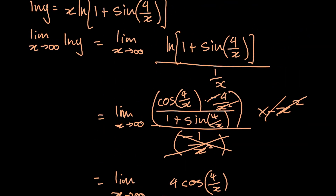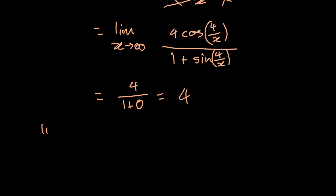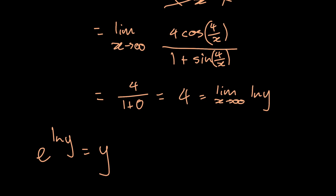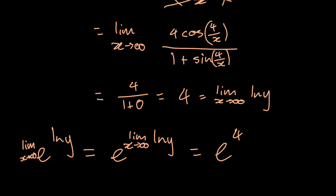But we're not done yet — that's the limit of the natural log of y. We need the limit of y itself, since we made the original function equal to y. We have the limit as x approaches infinity of the natural log of y equal to four. If we put the natural log of y in the exponent of e, that's just y. Taking the limit as x approaches infinity, we bring the limit up into the exponent since e is a constant. And since the limit of the natural log of y equals four, our final answer is e to the power of four.